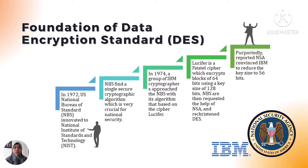In 1972, the U.S. National Bureau of Standards, which is now called National Institute of Standards and Technology, undertook a project. DES began with a request for proposal for a standardized cipher in the USA to find a single secure cryptographic algorithm, which was very crucial for national security and had to be kept as a secret.